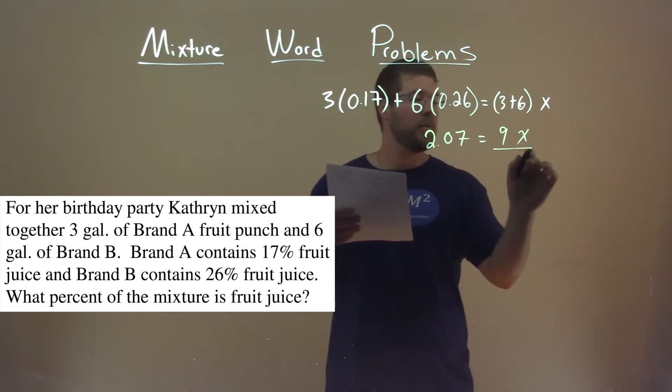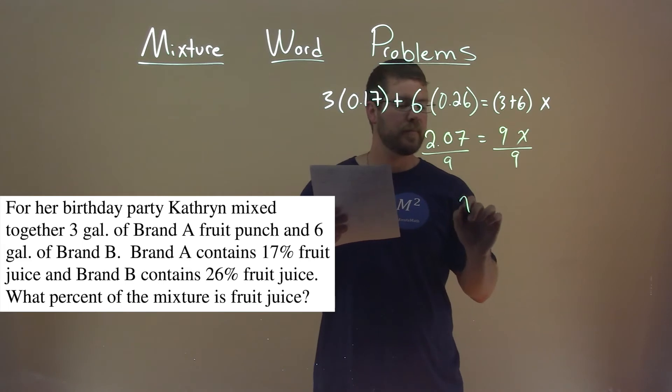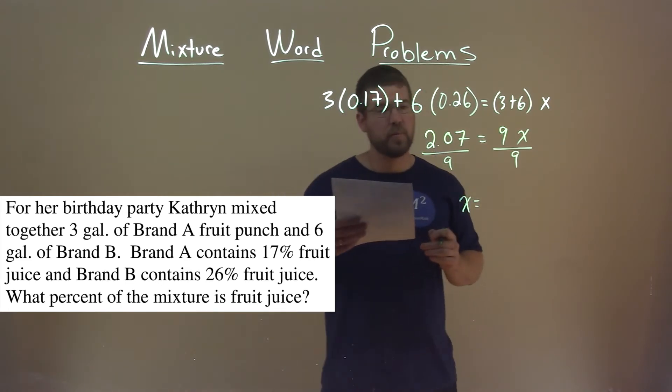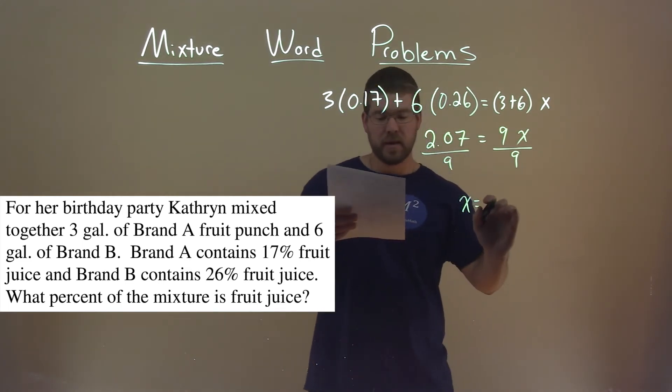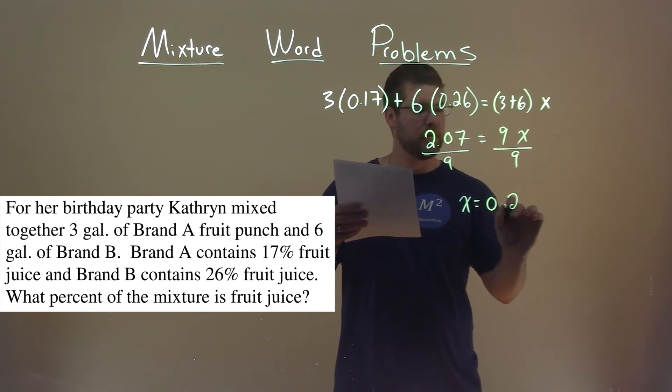We now can divide both sides by 9 to get X by itself. And what is X equal? Well, 2.07 divided by 9 is 0.23.